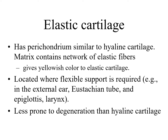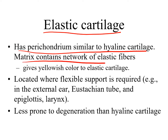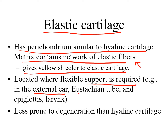The second type of cartilage is elastic cartilage. Like hyaline cartilage, it also has a perichondrium. The matrix contains a network of elastic fibers instead of type 2 collagen fibers, and these elastic fibers give this cartilage a yellowish color. Elastic cartilage is found where flexible support is required — in the external ear, Eustachian tube, epiglottis, and some parts of the larynx. It is also less prone to degeneration than hyaline cartilage; with aging, hyaline cartilage tends to undergo calcification, while elastic cartilage is more resistant to such changes.